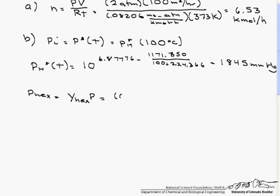So this equals 0.15 times the pressure, which is 2 atm, and then we need to put it in mmHg. 1 atm is 760 mmHg. So that equals 228 mmHg. So since the partial pressure is less than the vapor pressure, it is not saturated.